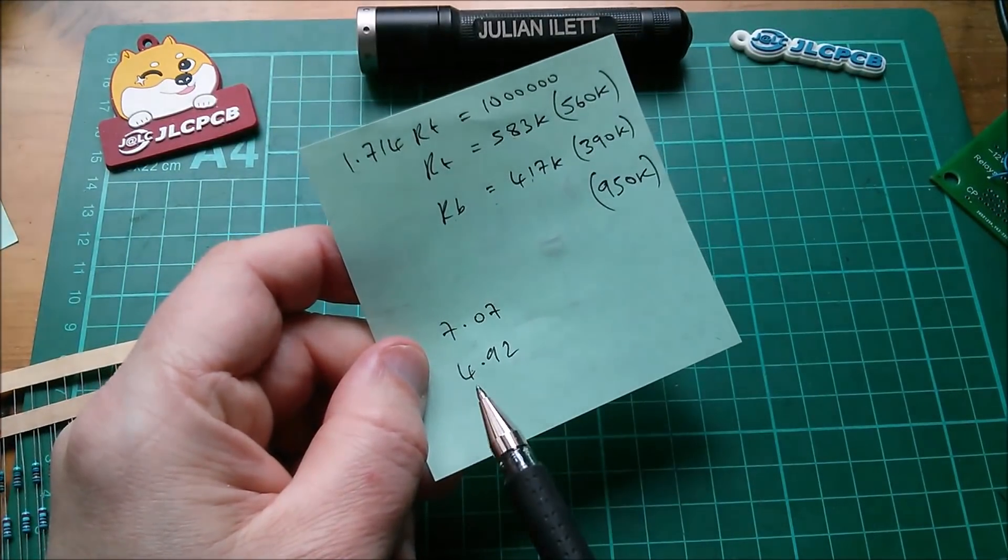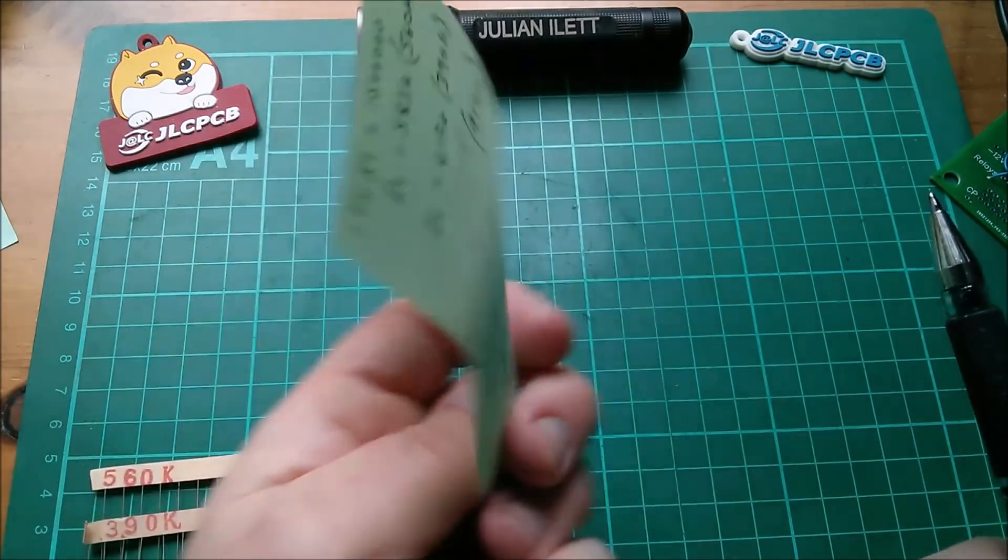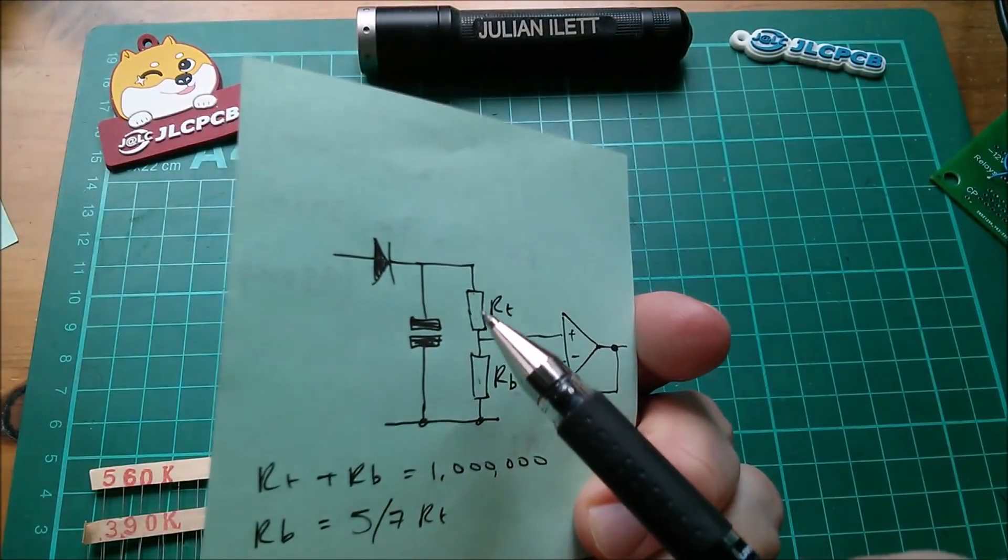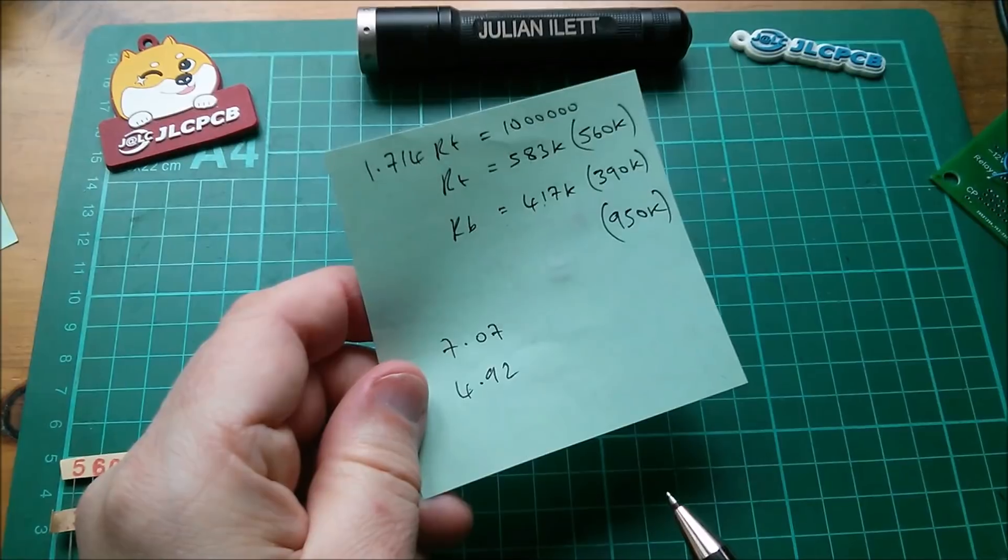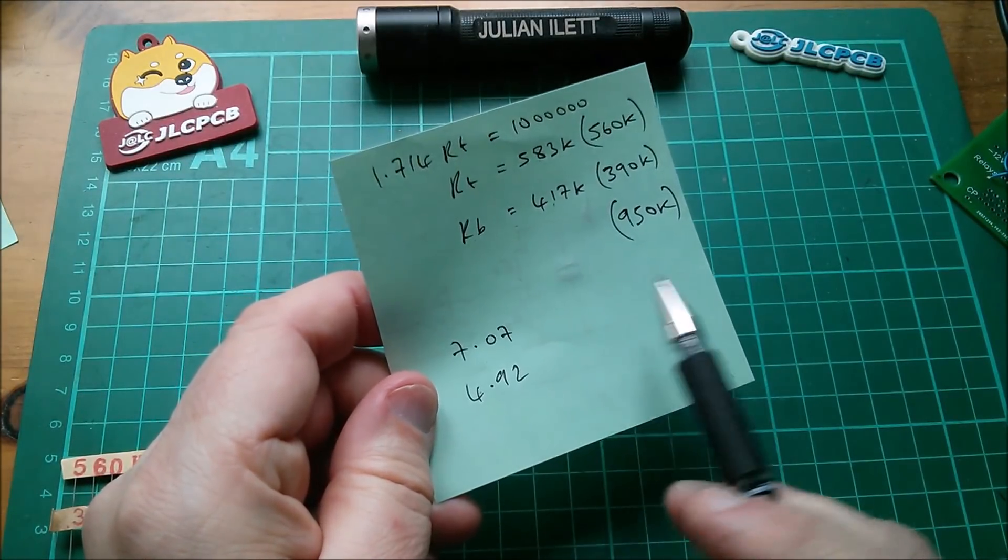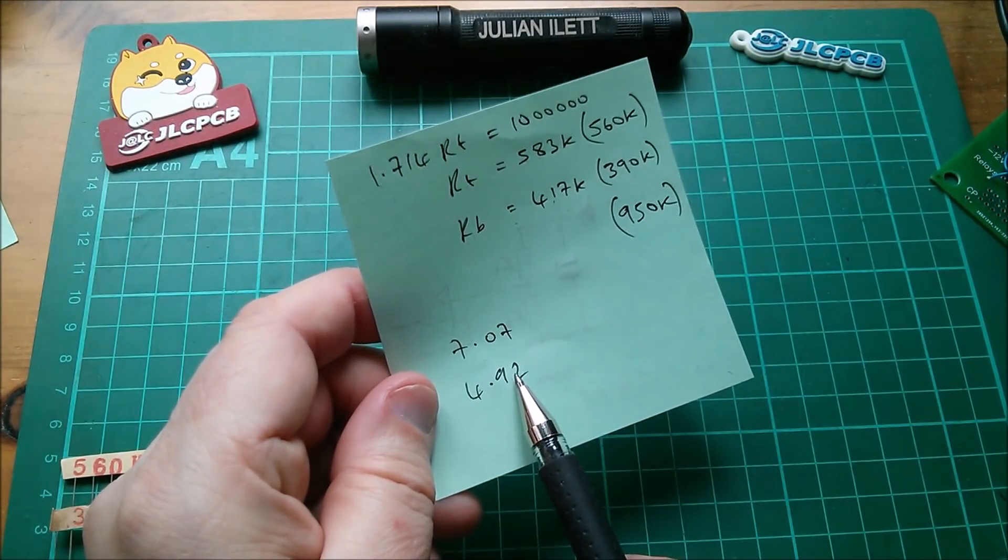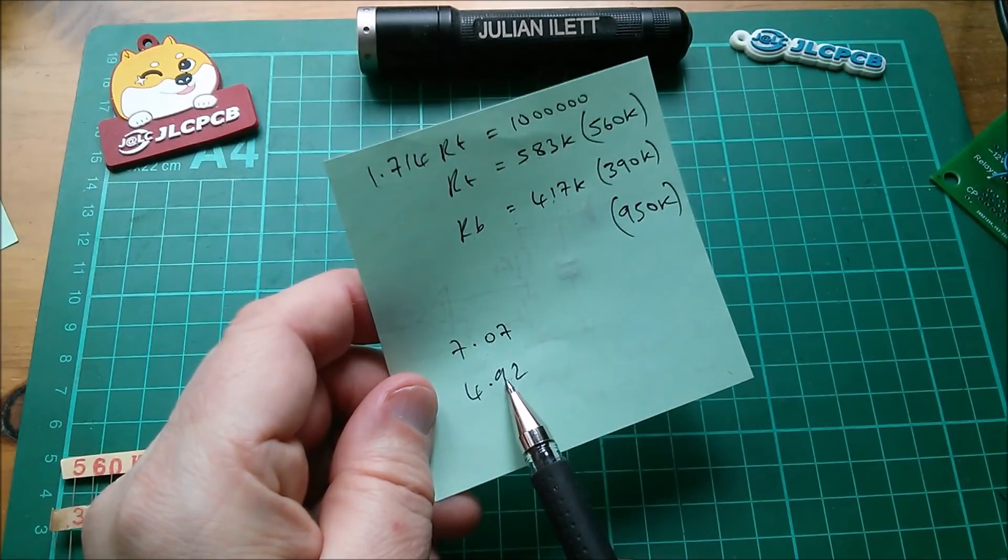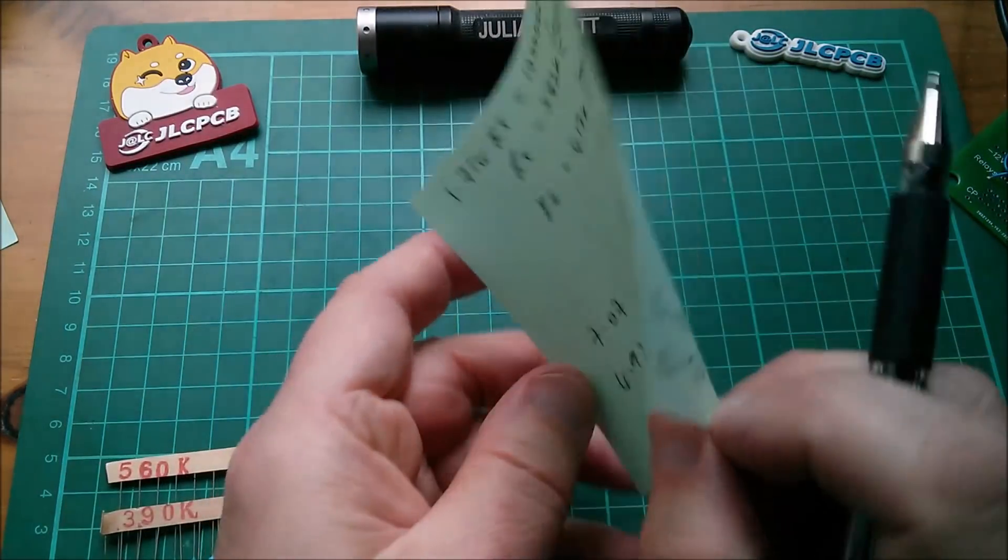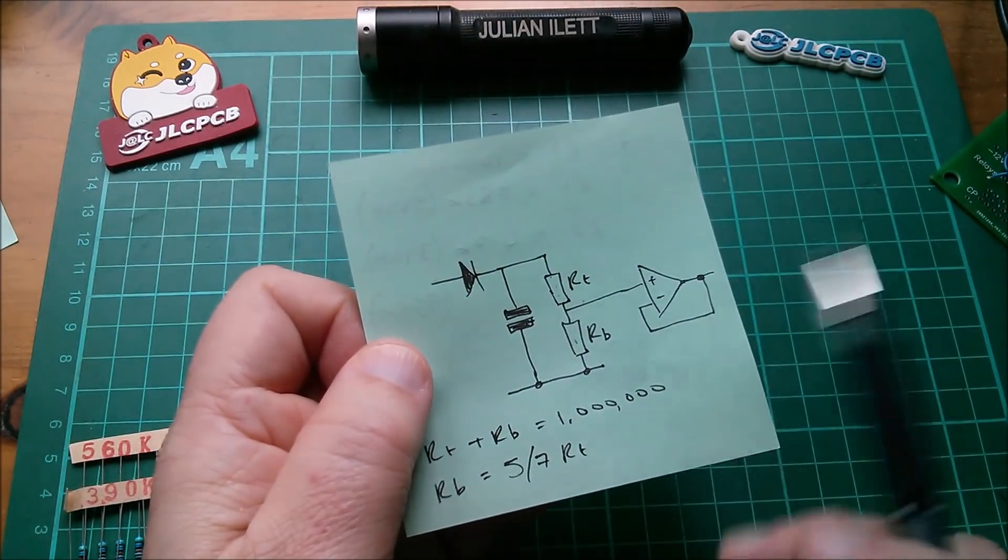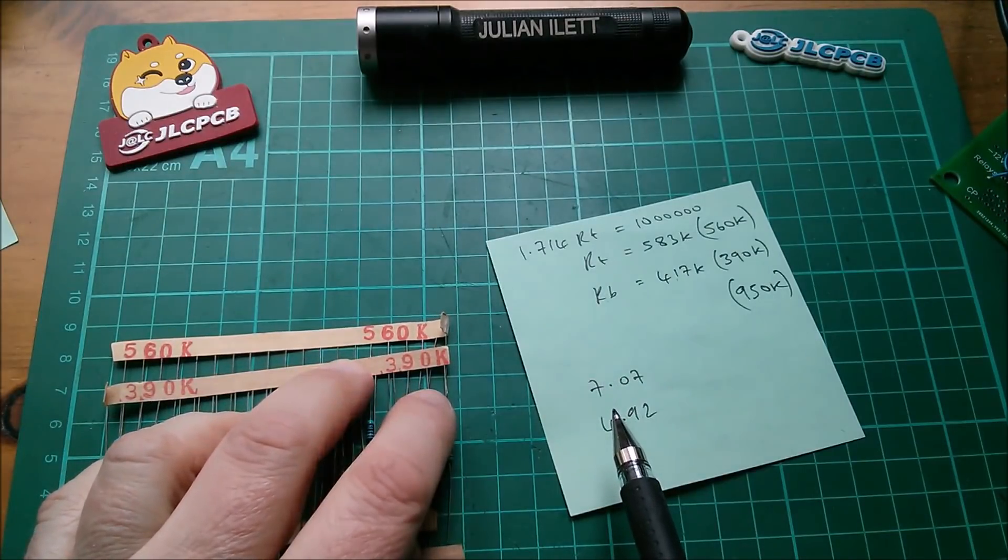So you can see I've written those two numbers down here. The 5 volts is a bit low, it's 4.92. The 7 volts, which will be the voltage across Rt if we've got 12 volts here, is a little bit high at 7.07. But I think it's not too far away. This is 0.08 error, this is 0.07 error, so it's not too bad, and I'm not sure that I'm going to find a better ratio of resistors.